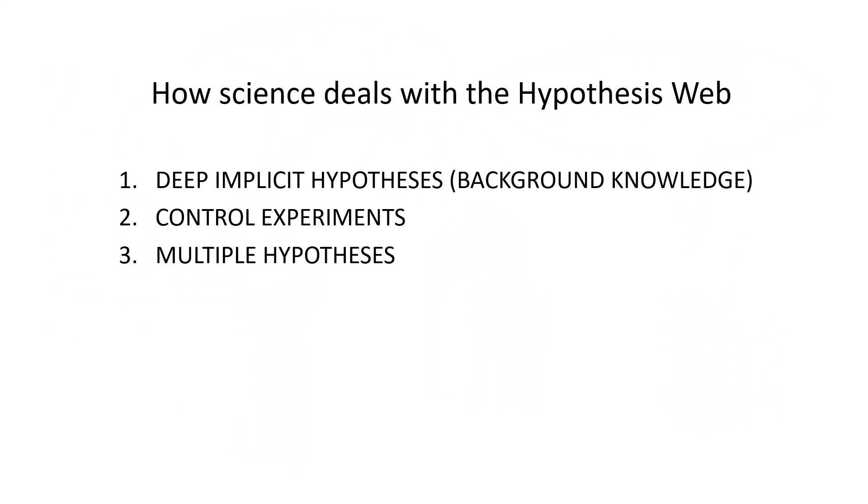Science deals with the hypothesis web in three ways. First of all, it relies on deep implicit hypotheses. This is the background knowledge I have been talking about. Second, it performs control experiments. And third, it relies on multiple hypotheses.